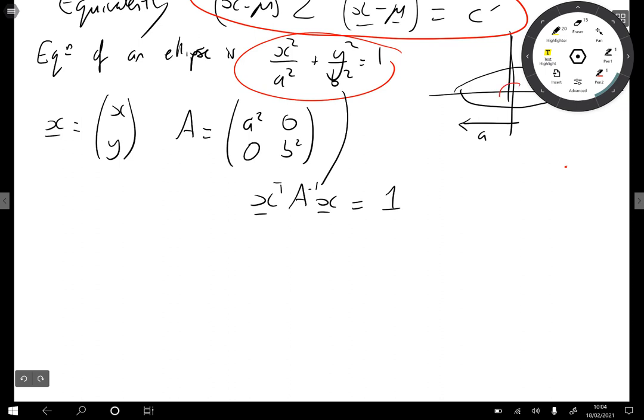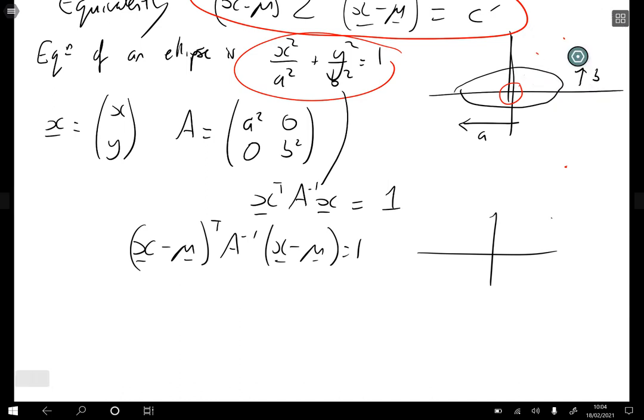Then this equation is the same as saying x transpose A inverse x equals 1. So to make the ellipse not centered around the origin here we can just subtract a different term. So (x - μ) transpose A inverse (x - μ) equals 1 is the equation of an ellipse. It's the same shape as before but now it is centered around μ.